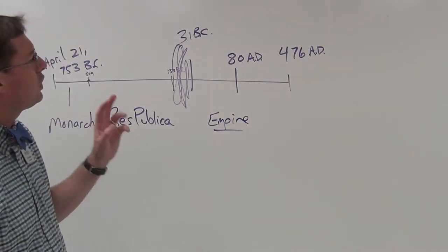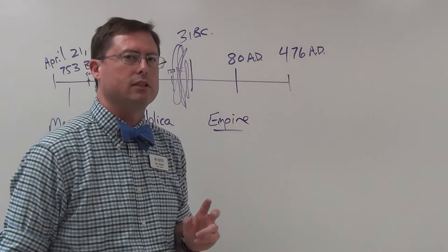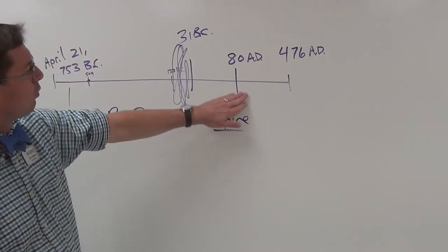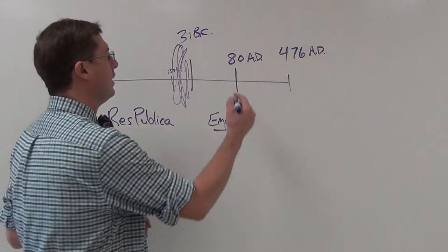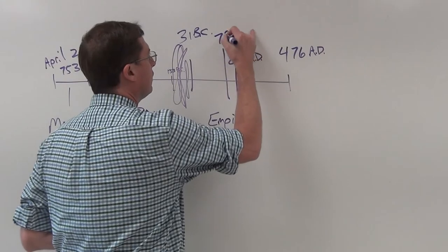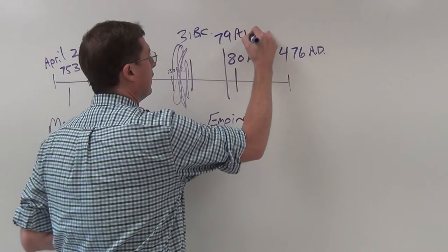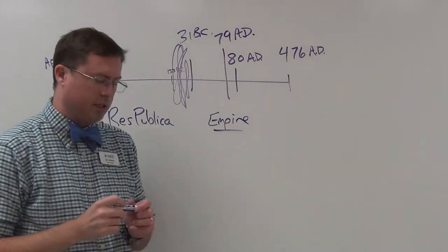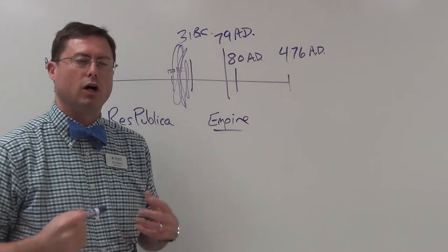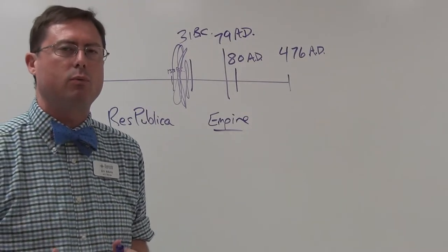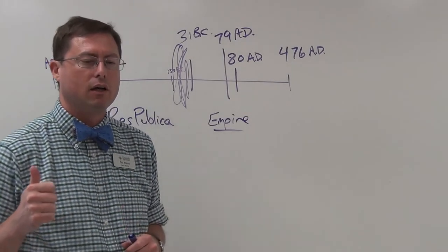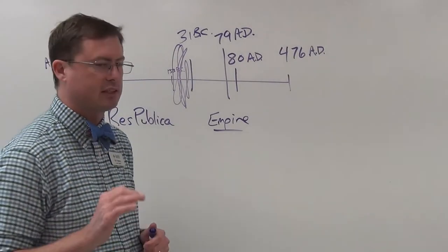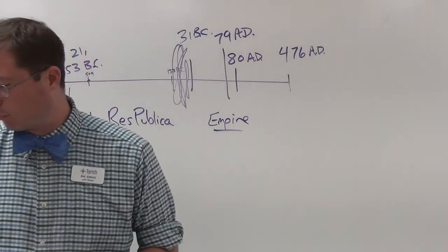A huge event has occurred in the year before our action takes place — in the year 79 AD. That event is incredibly important for our family because of where they are living when we first meet them, and it explains why that boy Sextus is living with them as well.